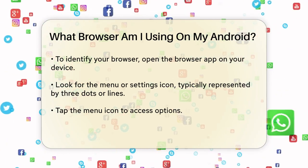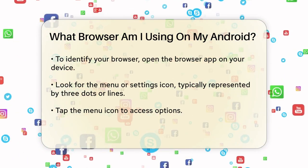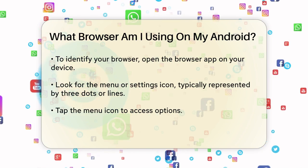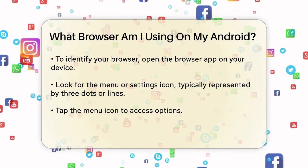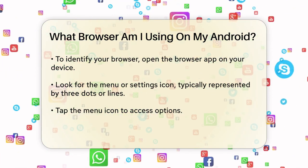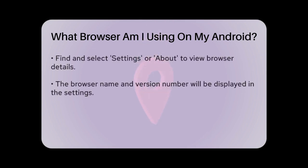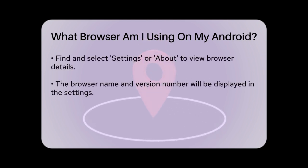In the menu, you'll often see an option labeled Settings or About. Tap on this to go to the browser's settings page. Here, you might see the name of the browser and its version number. For example, if you see Google Chrome and a version number, that's your answer.